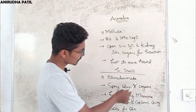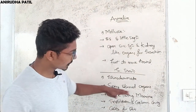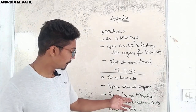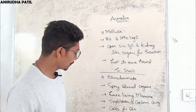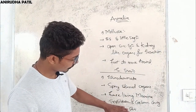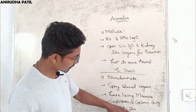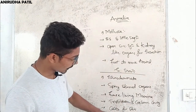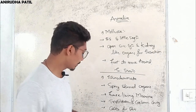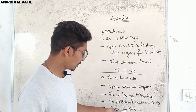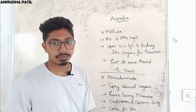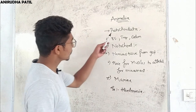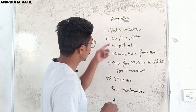The next group is Echinodermata, called spiny-skinned organisms. Most are free-living and marine. Their body has three layers of cells — triploblastic — with a coelomic cavity, and the body is covered with calcium carbonate structures on the skin. An example is the sea star.